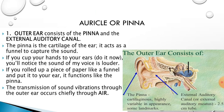The pinna and the external auditory canal make up the outer ear or external ear. The pinna is the cartilage of the ear which acts as a funnel to capture sound. If we cup our hands to our ears we notice the sound becomes louder; similarly, if we roll up a piece of paper like a funnel and put it to our ear, it functions like the pinna. The transmission of sound vibrations through the outer ear occurs chiefly through the air.